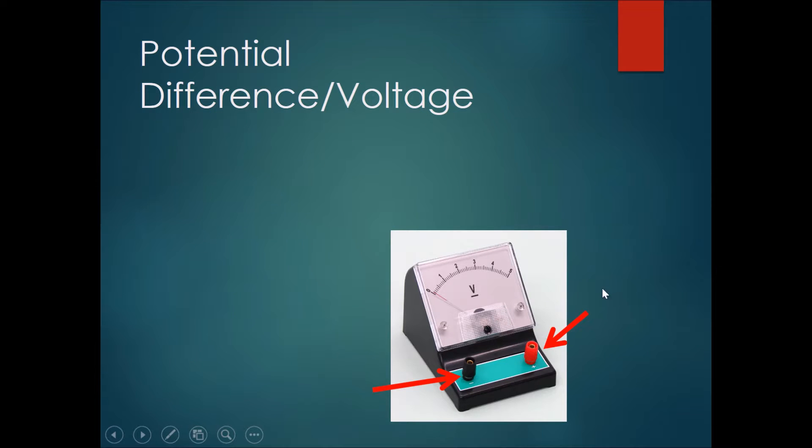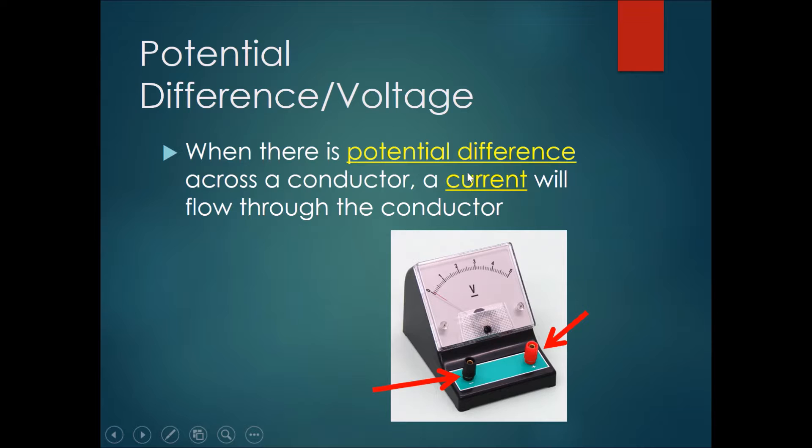So over here is a device that is used to measure the potential difference. When there is potential difference across a conductor, a current will flow through the conductor. The SI unit of potential difference is the volt, the symbol is V, measured by using the voltmeter.